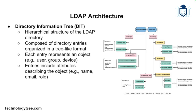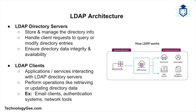The architecture of LDAP is built around three main components. First is the Directory Information Tree, a hierarchical structure of directory entries organized in a tree-like fashion, where each entry represents an object such as a user, group, or device, and contains a set of attributes describing that object. Second are the LDAP directory servers, which store and manage the directory information and handle requests from clients such as querying and modifying directory entries. Third are the LDAP clients — applications or services that interact with the LDAP directory server, such as email clients, authentication systems, and network management tools.